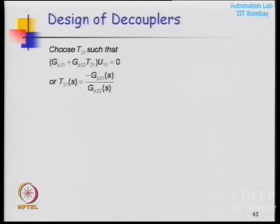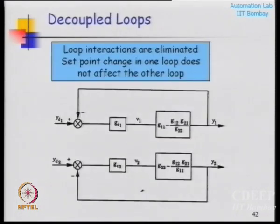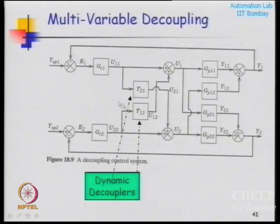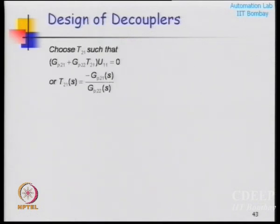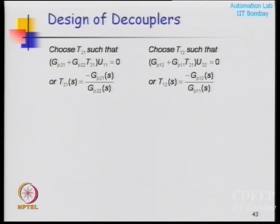Doing the algebra, I want to choose these elements so that the effect of cross-linking of U22 on U11 is zero, and the effect of the first controller on the second loop is zero, and the effect of the second controller on the first loop is zero. That gives me these two equations.